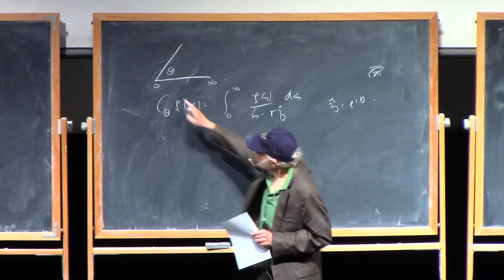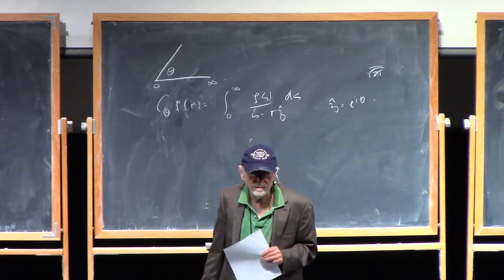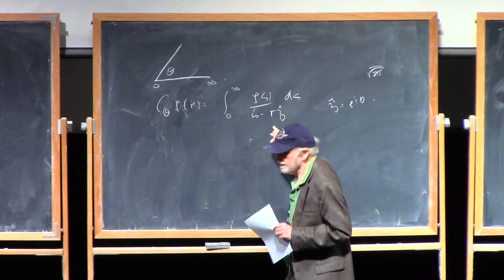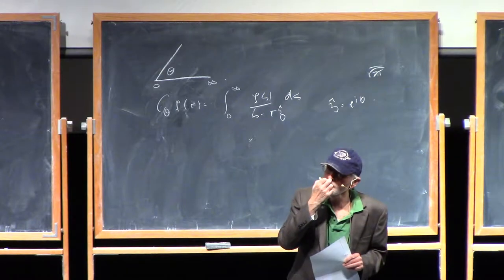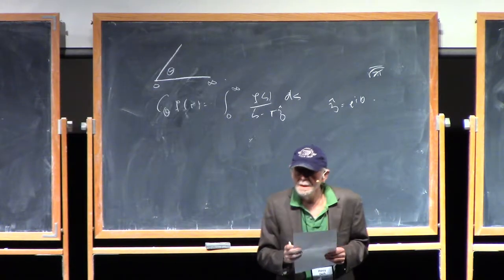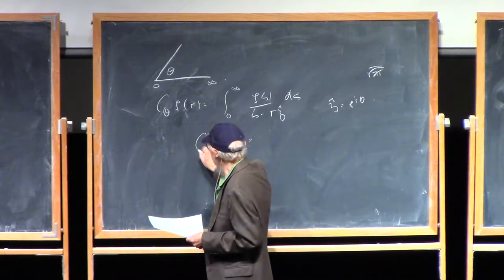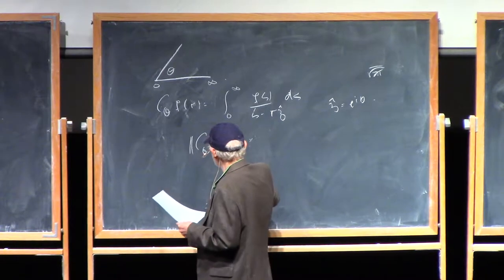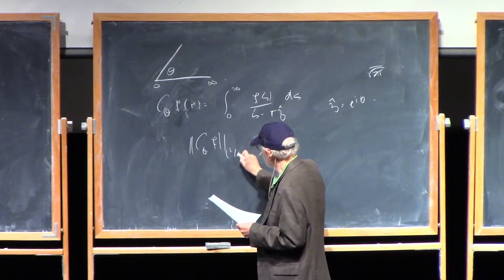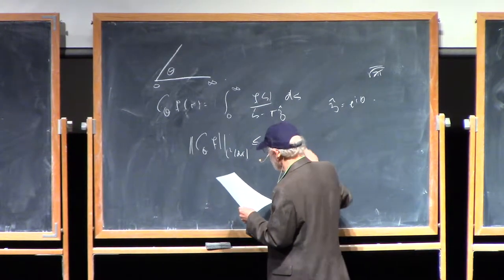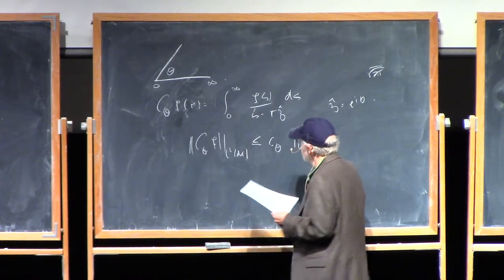Then you treat this as a group, a multiplicative group, with the Fourier transform which is given by the Mellon transform. That will diagonalise this operator here, just as the ordinary Fourier transform diagonalised the Cauchy operator on the line. That will turn your operator here into a multiplication operator. And what you find is that c theta f in L2 is less than some constant in theta times f in L2 of s.